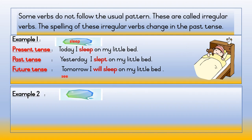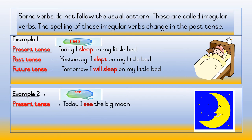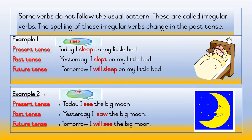Example two — the word is 'see.' Present tense: Today I see the big moon. Past tense: Yesterday I saw the big moon. Future tense: Tomorrow I will see the big moon.